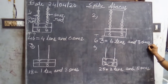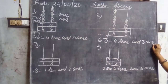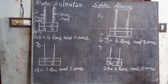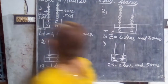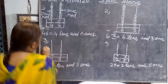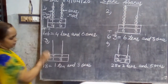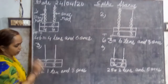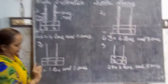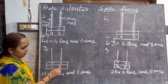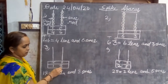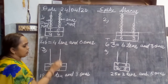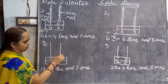Okay dear? Now in another example, see what we have to do? In number three, here we have to draw the spikes. At ones place the number is eight. So we will draw eight spikes in this.